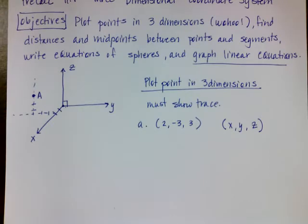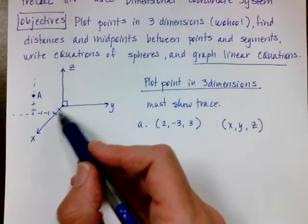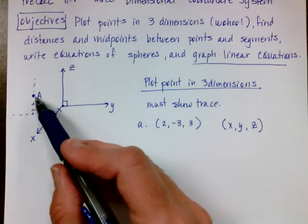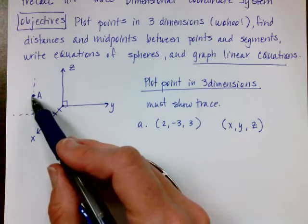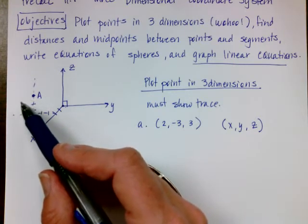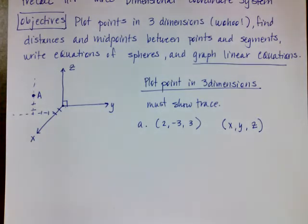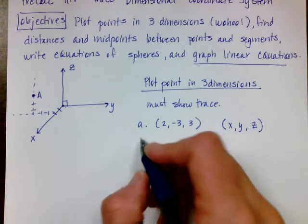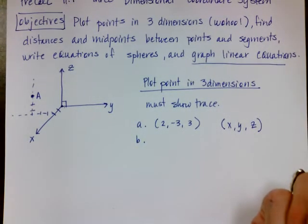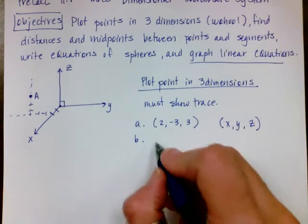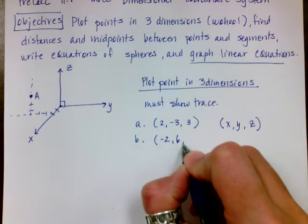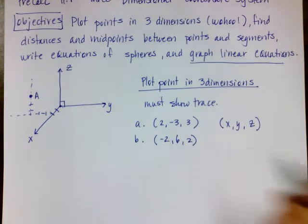The hard part is that if this is coming out of my page and then coming across, point A is kind of out of the page away from you — a little bit weird to visualize, but not the end of the world. So let's do B — B is going to be (-2, 6, 2).